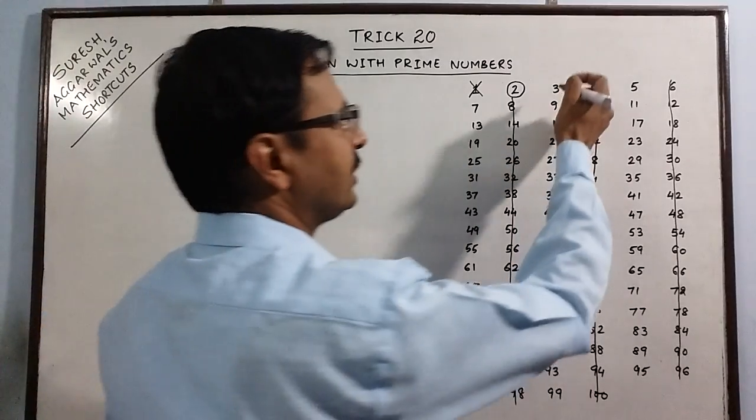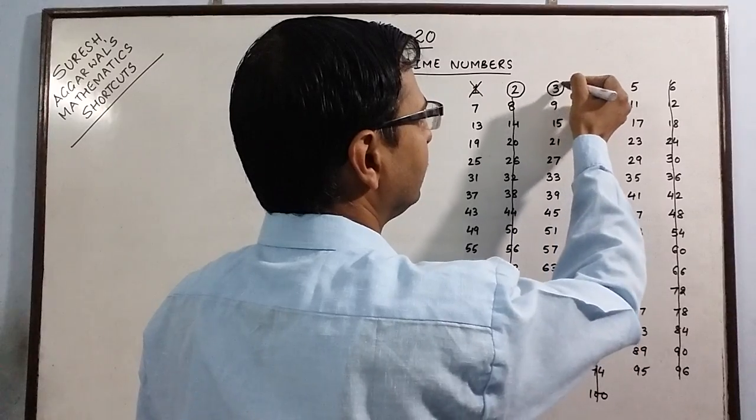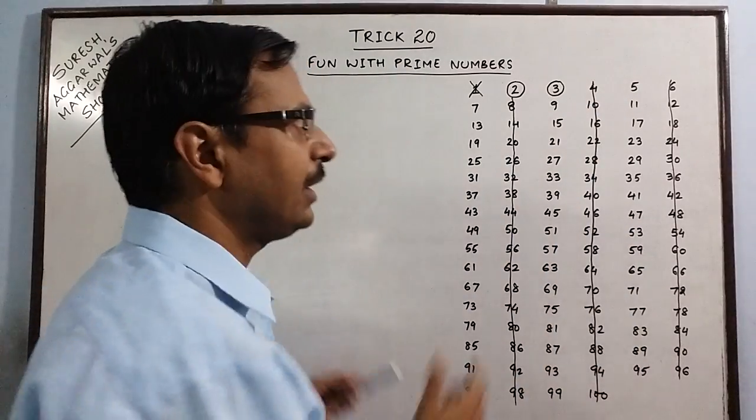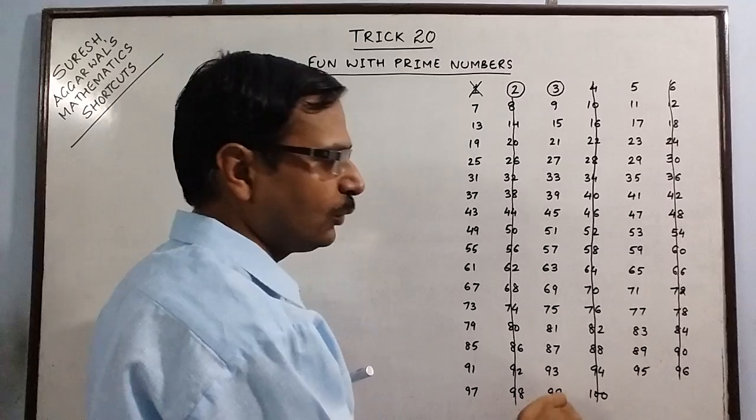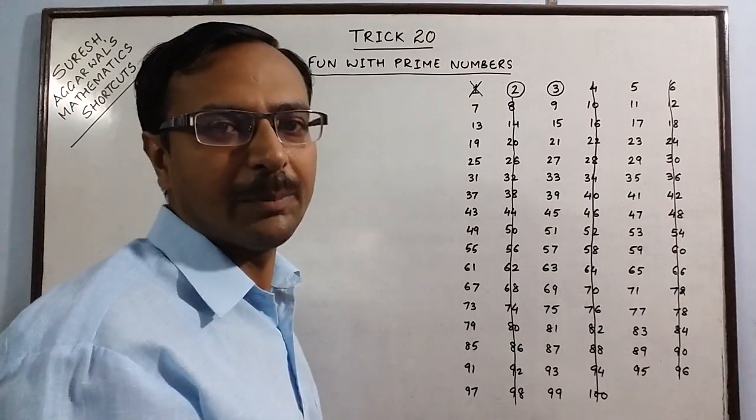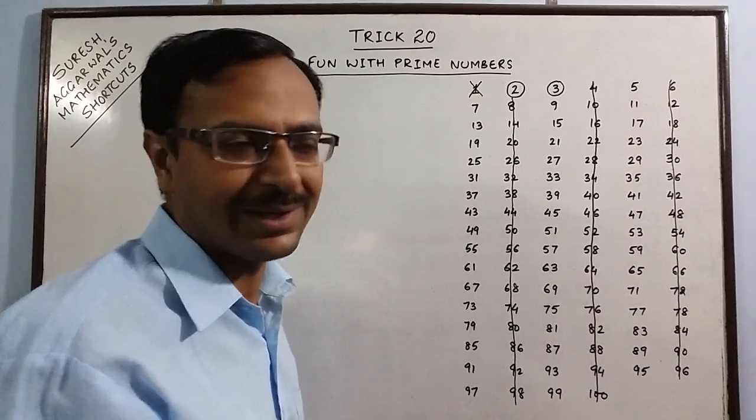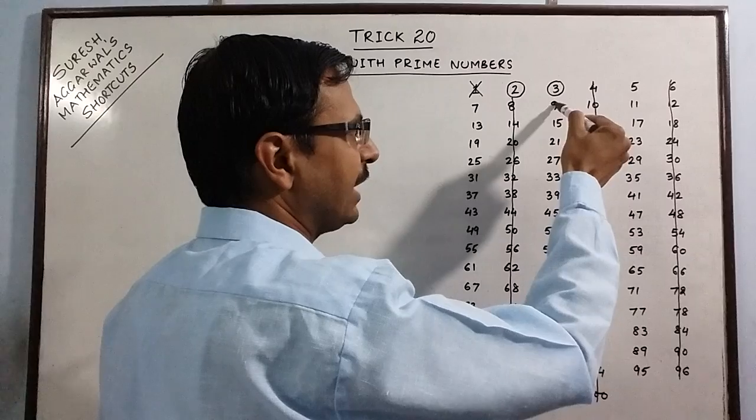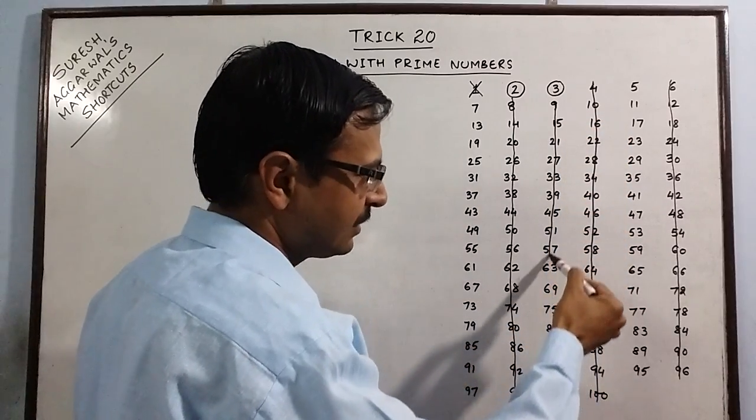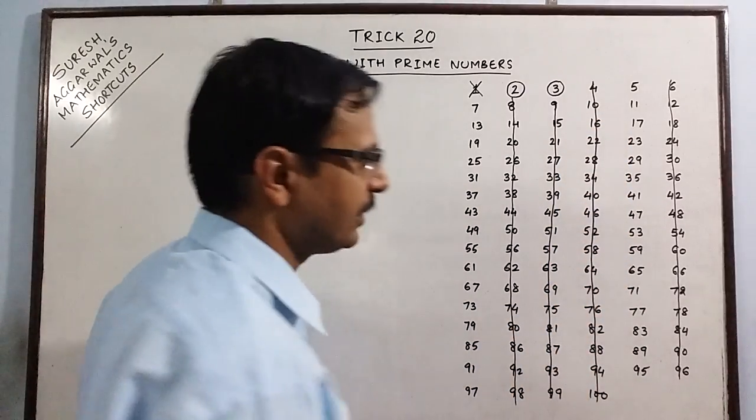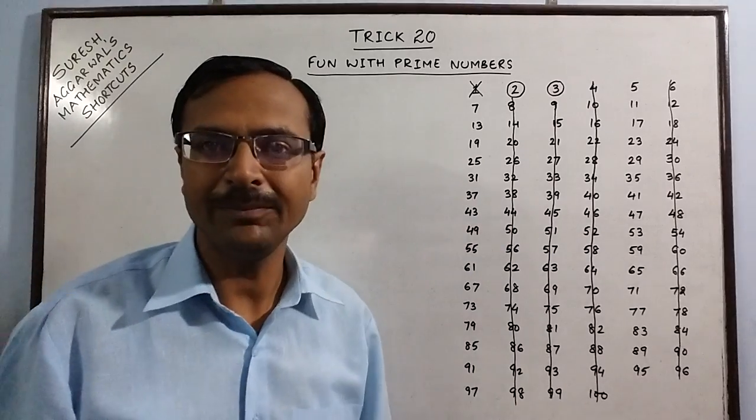Now come to the next number, 3. 3 is a prime number and underneath 3 in this column you find all numbers which are multiples of 3. So they cannot be prime. They are divisible by 3. So I strike off all numbers in this column as well except 3 of course which is prime.